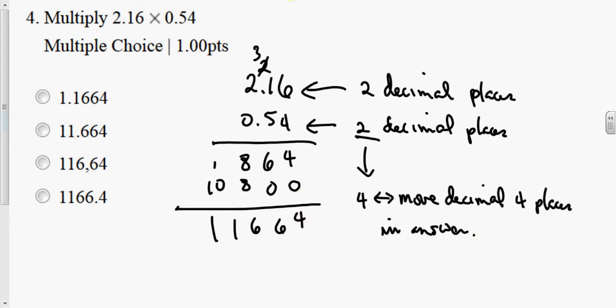So the answer you have to move the decimal 4 places. So what we do, we start here. We count 1, 2, 3, 4. So the decimal goes there. So that's 1.1664. That's the answer.